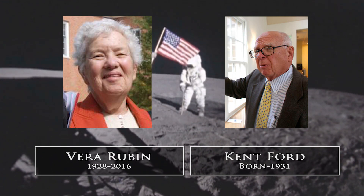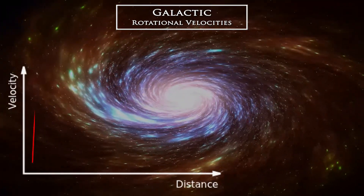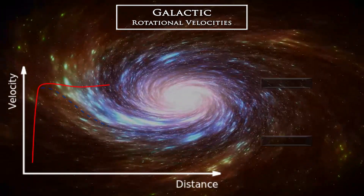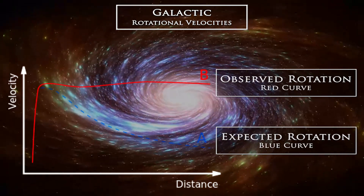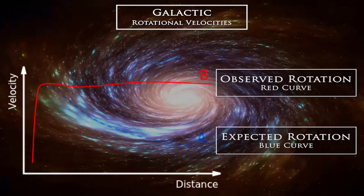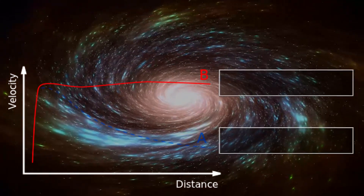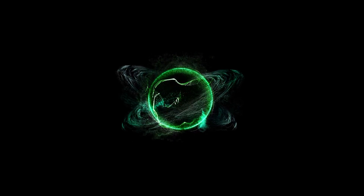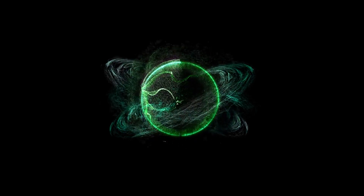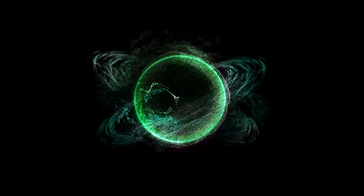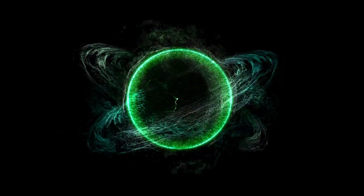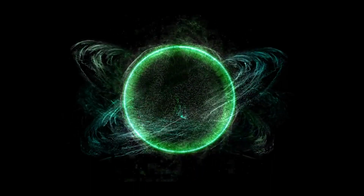Measuring the velocities of galactic rotation showed that the stars at the edge of the Milky Way were moving about as fast as the stars near the center, again reaffirming six times the mass than what we otherwise observe. Dark matter became a very real phenomenon, and even to this day we aren't quite sure what it is, although we now have more evidence than just star velocities to back up the mystery.